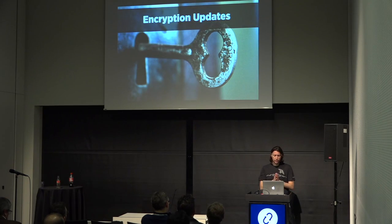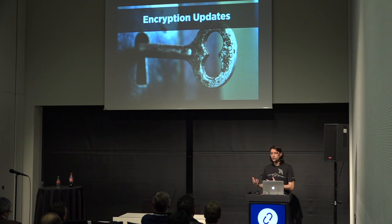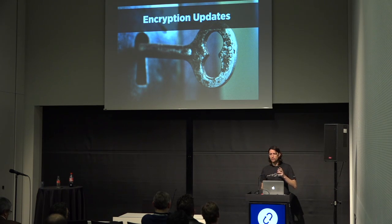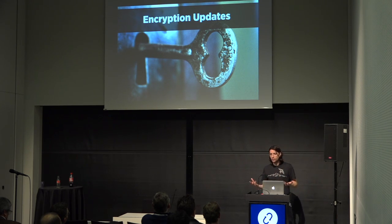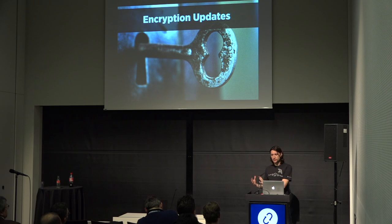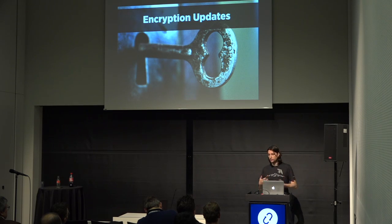One of the big things we've done in the last six months is improving some of the interfaces and support for encryption. Swift does support at-rest disk encryption — the threat model we're specifically targeting is: when a hard drive is removed from a storage node, it is safe to RMA it because the user data on it is encrypted. A lot of people really like this — they don't have to worry about isolating those hard drives or not putting them back in other servers being reprovisioned.